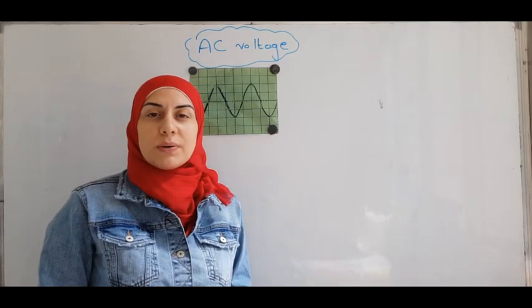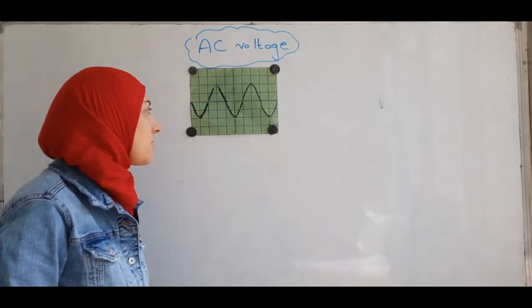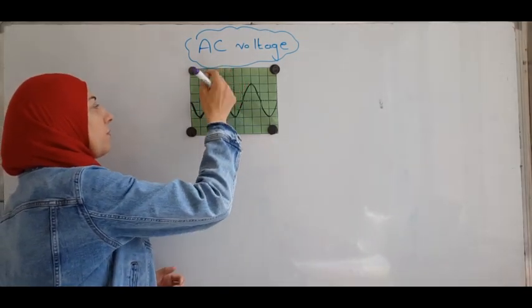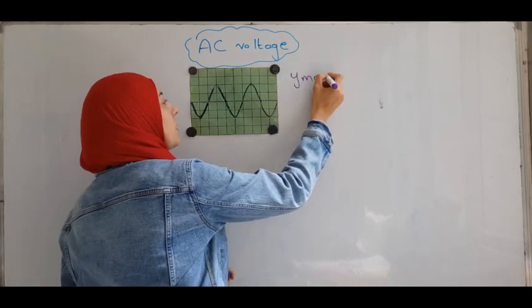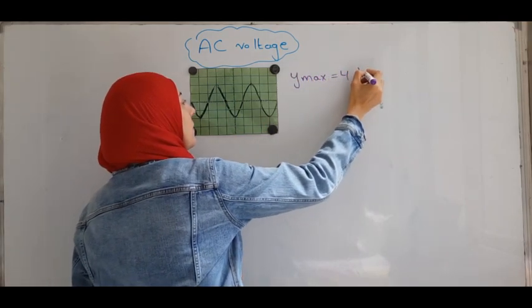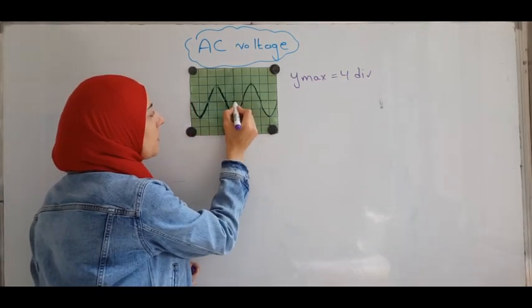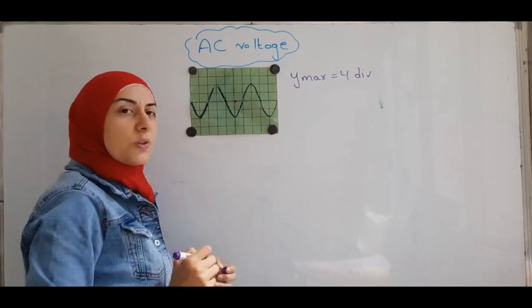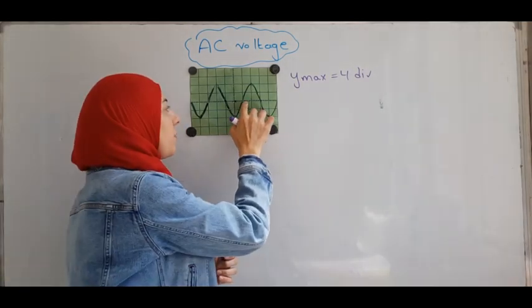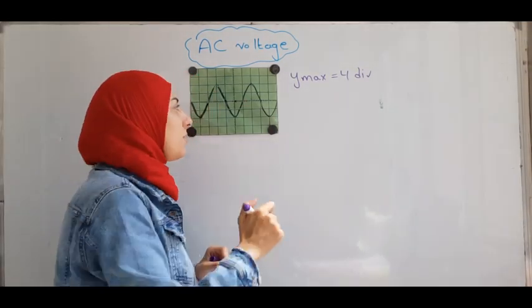The maximum number of divisions on the y-axis is four divisions. So one, two, three, four. So y maximum equals four divisions. Now, of course, this is one division. But what about this one here, this small subdivision? Since we have five of them, then each subdivision is 0.2 divisions.